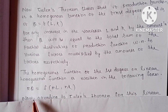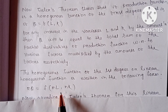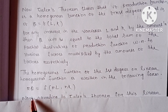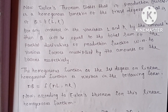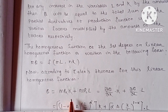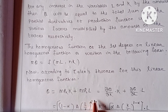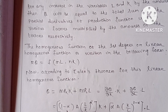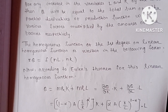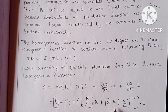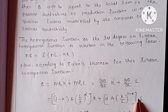The homogeneous function of the first degree, or linear homogeneous function, means that if we increase labor and capital by N times, output will increase by N times. According to Euler's theorem for the linear homogeneous function, Q = MPK·K + MPL·L. We will now put the previously calculated value of MPK here and multiply by K, and similarly put the value of MPL and multiply by L.